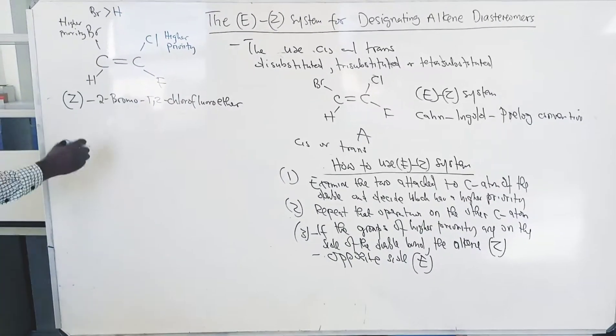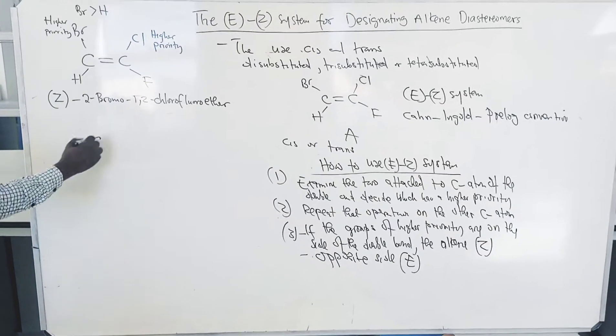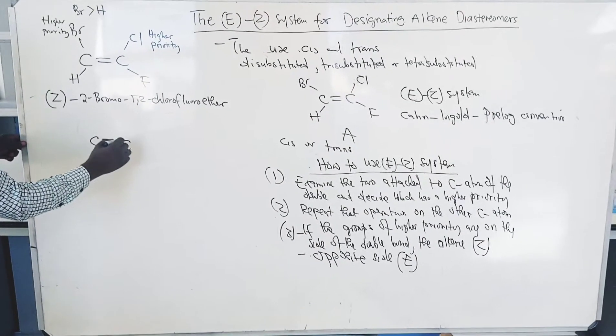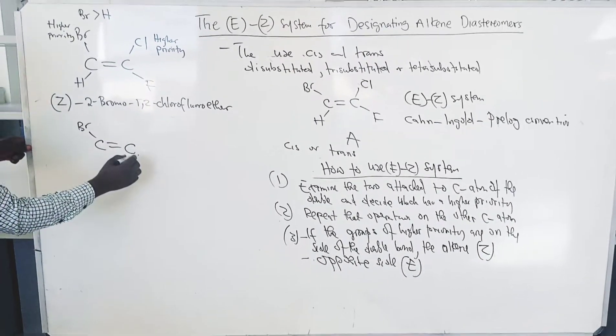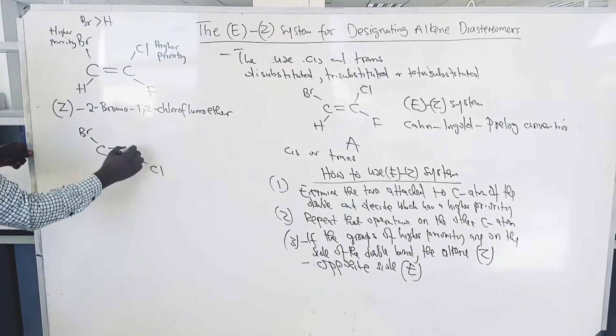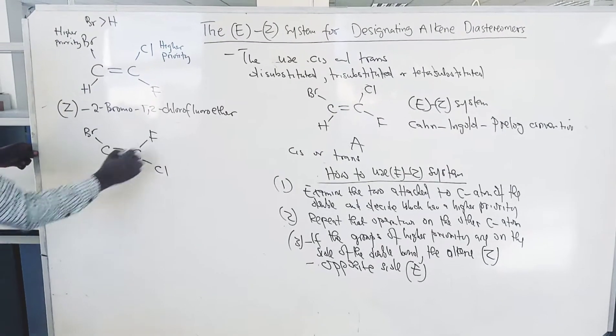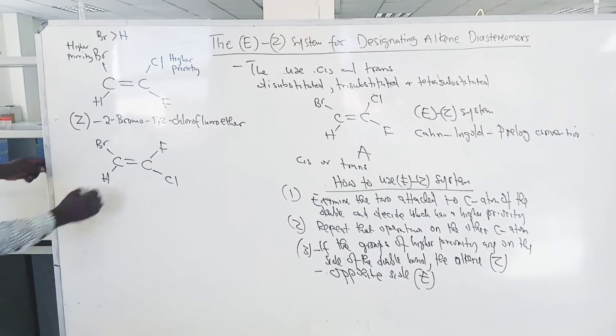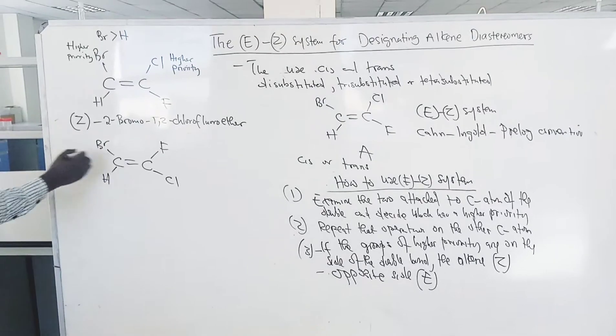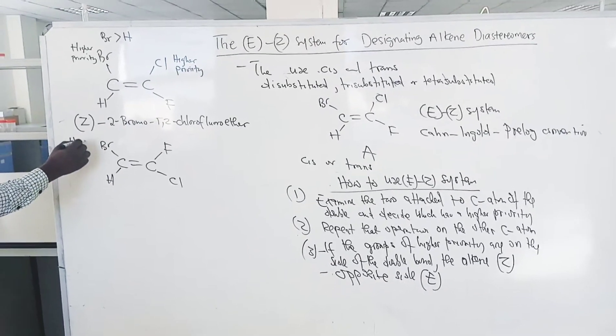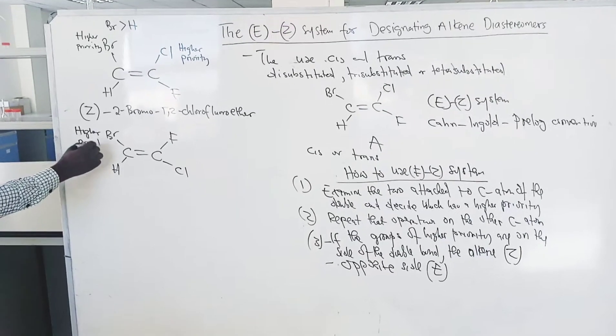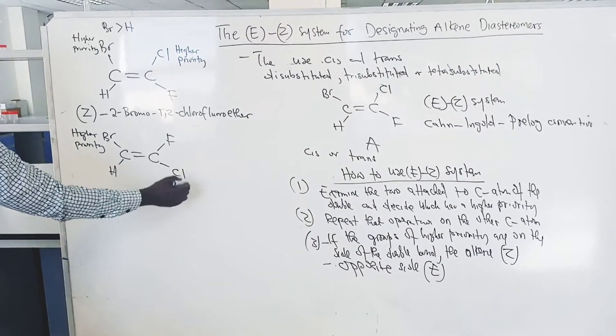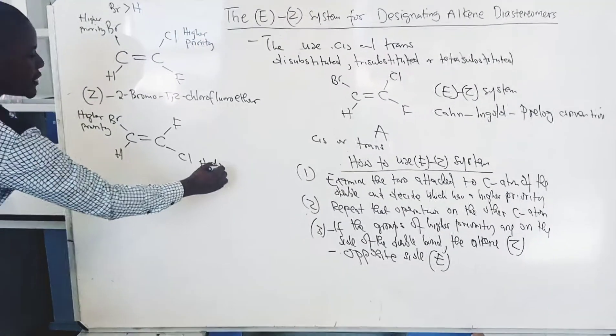So, let's interchange the two groups. If we have another compound, then we have Cl, then fluorine there, then hydrogen. We do the same. We compare. Here, bromine has higher priority than hydrogen. Higher priority. Then between the two, chlorine has higher priority.